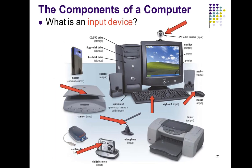Looking at the diagram, the arrows show various input devices: a microphone, a digital camera, the keyboard as the main input device, a mouse, a webcam which sends data and instructions into the computer system for processing, a scanner, and many others.